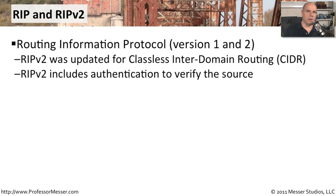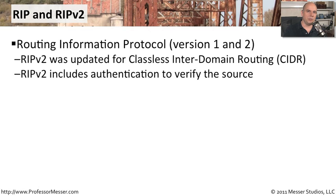Although RIP has been around for a long time, we've updated it through the years. The latest version for IPv4 networks is RIP version 2. RIPv2 was updated for classless inter-domain routing because the original RIP protocol was designed for class-based networks. RIPv2 also has built-in authentication so that when a router gets an update of routes, it can authenticate that those routes came from the proper source.